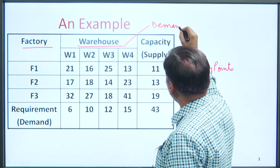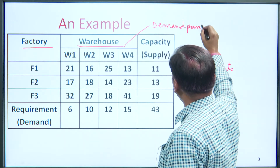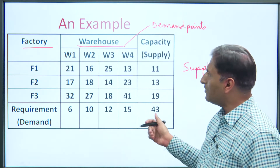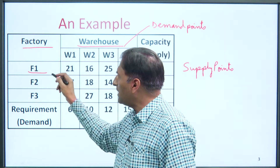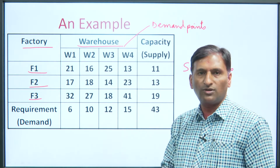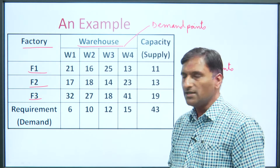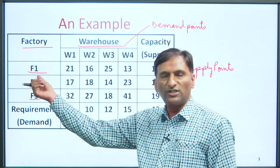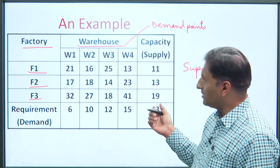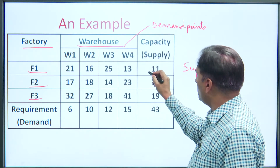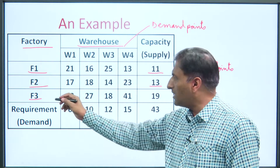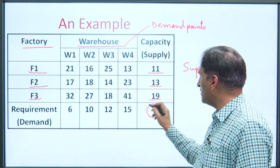Any transportation problem will have demand points and supply points. The supply points will be represented row-wise. There are three supply points — three factories — where an organization has three plants. Units are being produced there: F1 produces 11 units, F2 produces 13 units, and F3 produces 19 units — total 43 units.